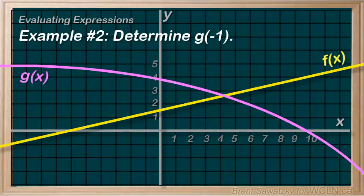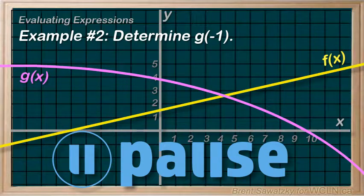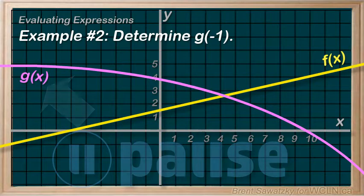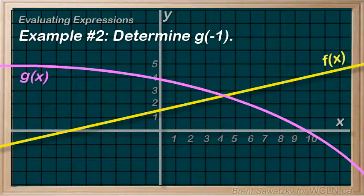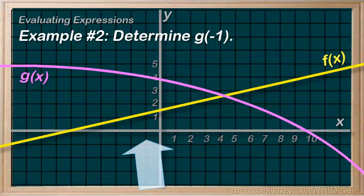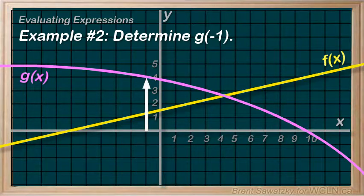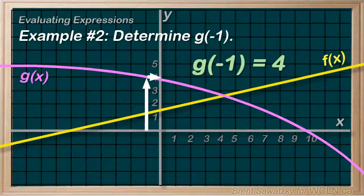Example 2: Determine g(-1). Pause the video and see if you can figure this one out. We're talking about function g, so this graph. The negative 1 in brackets tells us that the variable x is negative 1. So on the graph, we look for x equals negative 1, and we determine the value of function g at that point. Following up from x equals negative 1, we see the graph is at a y value of 4. So g(-1) equals 4.